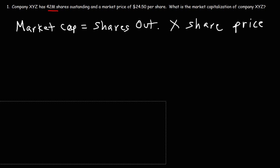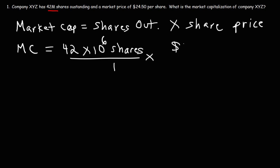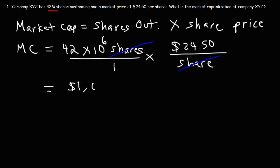Going back to the formula, let's abbreviate market cap as MC. We have 42 million shares outstanding — replacing capital M with 10 to the 6 — times the share price of $24.50 per share. The unit 'shares' will cancel, and multiplying those two numbers gives a market cap of 1 billion, 29 million dollars.